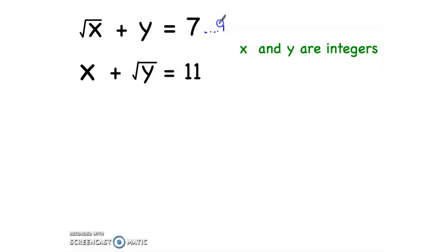I will call this one equation 1, and this equation 2. Now we will subtract 1 from 2. Let's see what we will get. So 2 minus 1, we have x plus radical y minus radical x minus y equals 11 minus 7, which is 4.